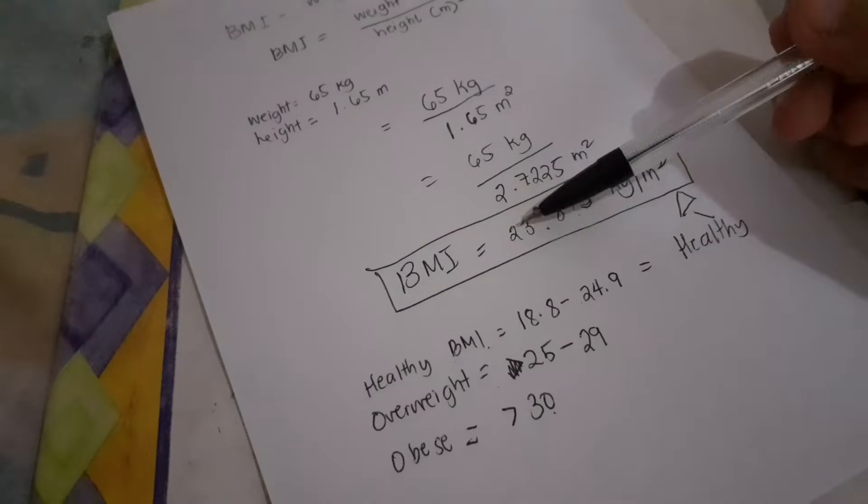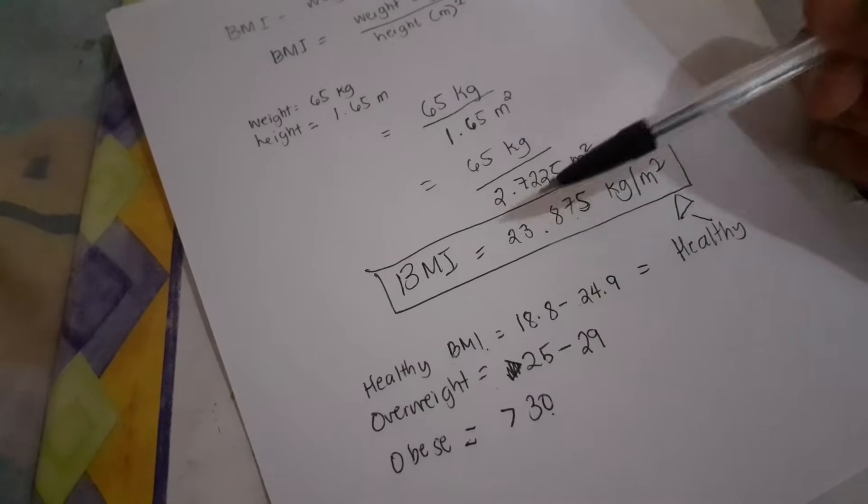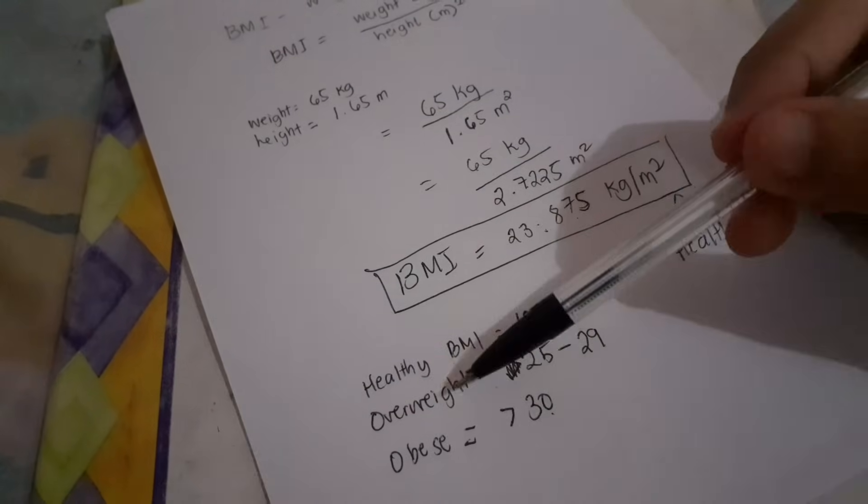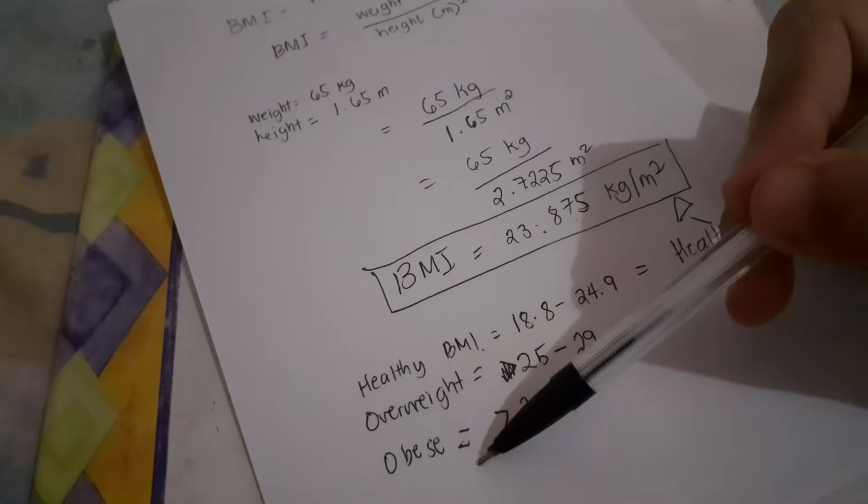So pag ang naging sagot mo dito sa computation mo ay 26, halimbawa lang, pag 26 yan, ibig sabihin overweight na yung taong yun. Pag naman 30 and above, siya ay obese.